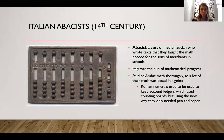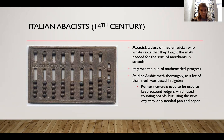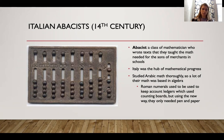That leads us to the Italian abbacists — an abbacist is a class of mathematician who wrote texts teaching the math needed for sons of merchants in school. These merchants had kids and the abbacists wrote basically textbooks and taught math to the sons so they could be well versed in merchant and trade when they got older. Italy was the start and hub of this, and they studied Arabic math thoroughly. A lot of the math was based in algebra like the problems we saw earlier. There's actually a counting board in the picture, with Roman numerals and sliding pieces used to keep account ledgers, but they figured out it was more cost effective to use pen and paper, so they transitioned. The Italian abbacists did that during this time.